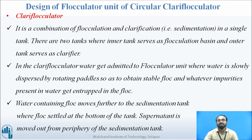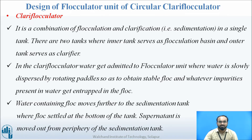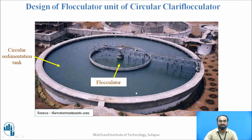In the clariflocculator, water gets admitted into the flocculator unit first. Then the water is mixed slowly and dispersed by rotating paddles which are provided in the flocculator, so as to obtain a stable floc. Whatever impurities present in the water get entrapped in the floc. The water containing floc is then moved out from the flocculator unit to the sedimentation tank, where the floc settles at the bottom. The supernatant above is moved out from the periphery of the sedimentation tank. This is the diagram where you can see the clariflocculator, with the flocculation unit provided in between.